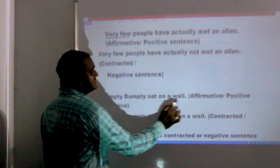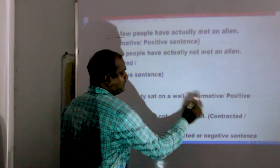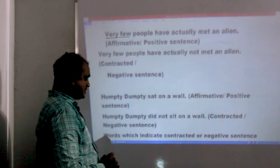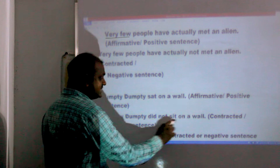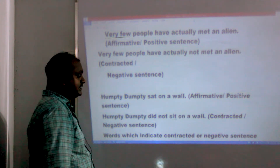For example: 'Humpty Dumpty sat on a wall' — that is affirmative or positive. 'Humpty Dumpty did not sit on a wall' — that is contracted or negative.